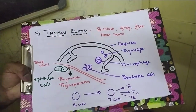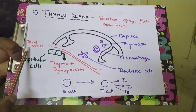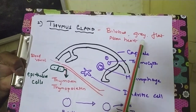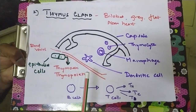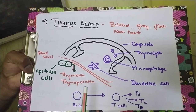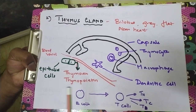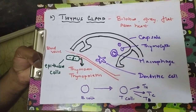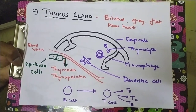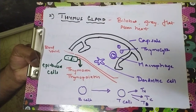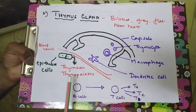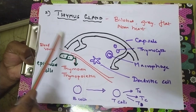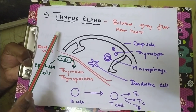The second primary lymphoid organ is the thymus gland, present above the heart. It is bilobed, grey and flat in structure. The thymus gland matures up to puberty — up to around 14 years it undergoes growth and functioning — and then its functions start degenerating up to age 45. That is why immunity is lowered in the later stages, and why we should develop our immune system better during puberty.